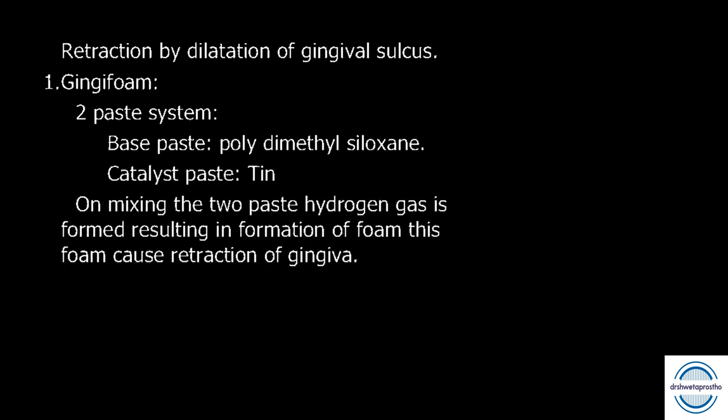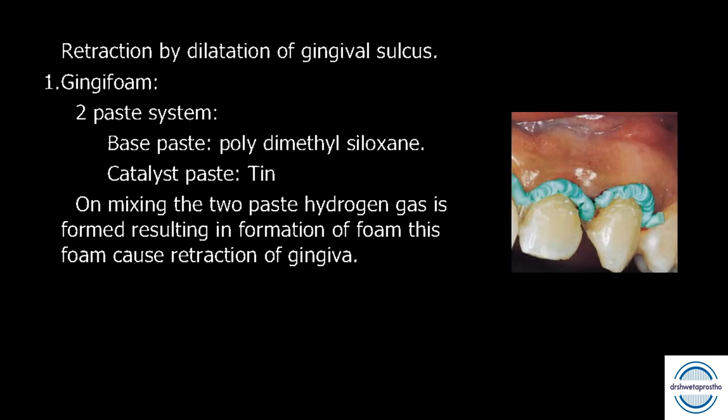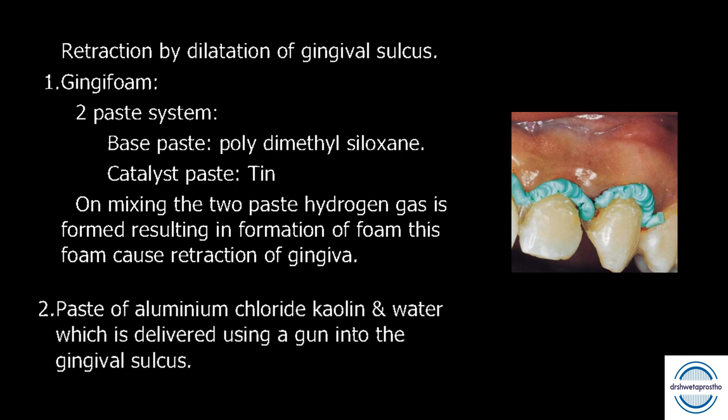Another recently added popular technique causes retraction by dilatation of the gingival sulcus. First is gingiform paste — a two-paste system: the base paste contains polydimethylsiloxane and the catalyst paste contains tin. When mixed, hydrogen gas is formed, creating a foam within the gingival sulcus causing retraction. Second is a paste of aluminum chloride combined with water, delivered using a gun into the gingival sulcus, causing dilatation and gingival displacement.